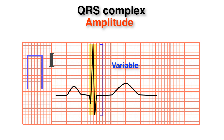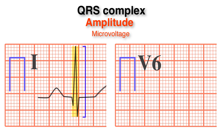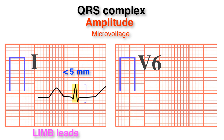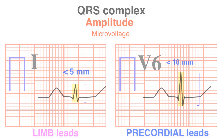The amplitude may vary. We can say there is microvoltage when the total amplitude of the QRS is less than 5 mm in the limb leads and less than 10 mm in the precordial leads. We will address increased amplitudes later when we discuss ventricular hypertrophy.